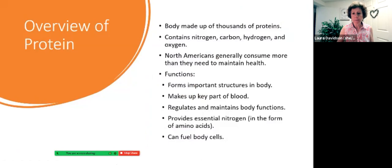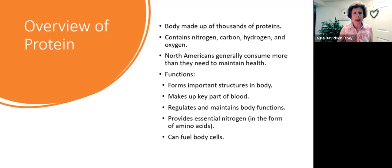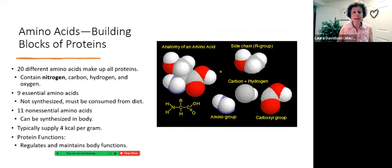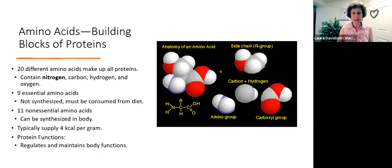This is a quick overview of protein, and you certainly know this because you've taken anatomy and physiology. Protein is an essential nutrient, not only because it makes up structures of our body, but also for other roles as well. Amino acids are the building blocks of protein. Nine of these are essential, which means you must get them from your diet because your body cannot synthesize them, and 11 are non-essential. They can be synthesized in the body as long as you have the building blocks, which include nitrogen. Protein sits apart from carbohydrates and lipids in the fact that it does contain nitrogen, which is not found in carbohydrates and lipids.